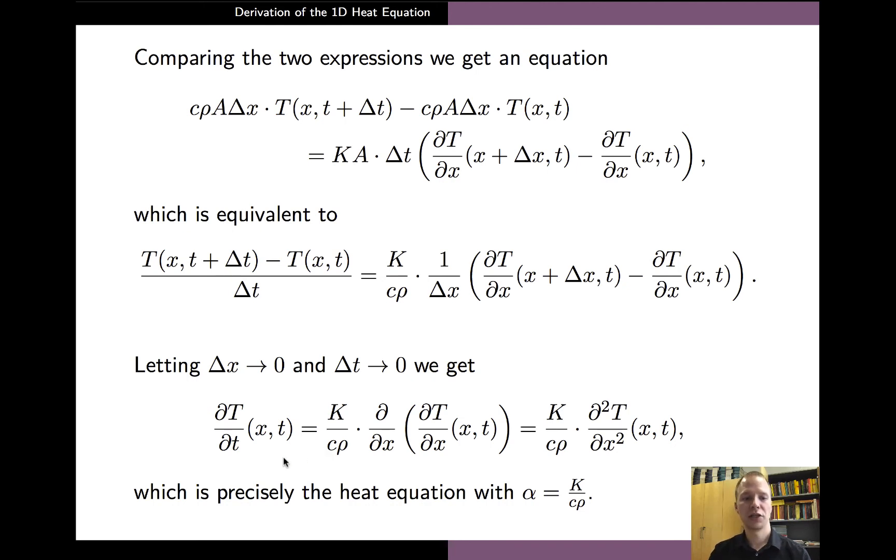then the ratio on the left hand side becomes the time derivative of the temperature. And similarly, on the right hand side, the limit of delta x going to zero becomes a partial derivative with respect to x. And in total, we get a second partial derivative of T with respect to x. And the equation that we arrive at is precisely of the form of the one-dimensional heat equation that we were looking for.